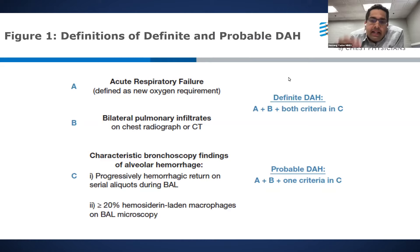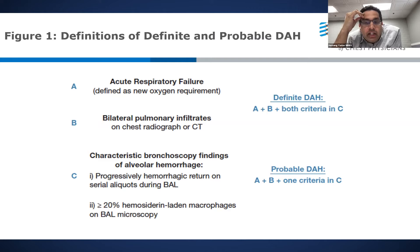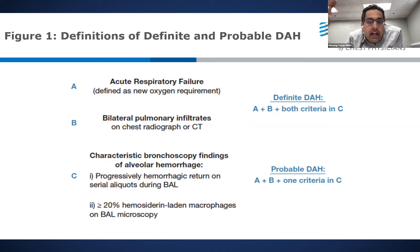I absolutely agree, and that was part of the rationale behind using the definite and probable criteria — at least giving you flexibility to say that if you have progressive hemorrhagic return but not hemosiderin-laden macrophages, you can still label that under the DAH column, understanding that pathological confirmation isn't there, either because of inadequate sample or because it was too early.